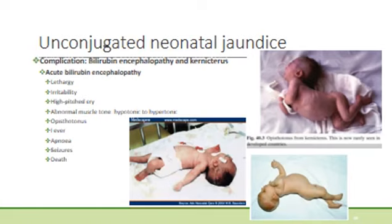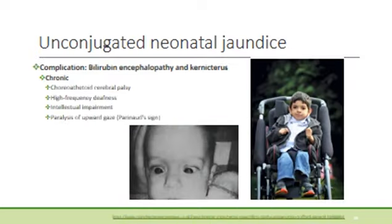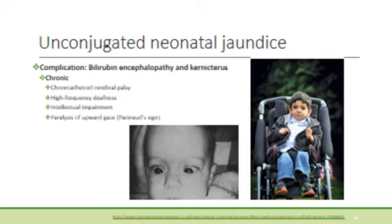In the worst case scenario, bilirubin encephalopathy can lead to death. It can cause chronic disability and is one of the leading preventable causes of cerebral palsy. Because of the toxicity of bilirubin to the basal ganglia, the cerebral palsy type most commonly found is choreoathetoid CP. Bilirubin is also toxic to the nerve cells of the ears, and therefore high-frequency deafness can result. Patients may later experience intellectual impairment and paralysis of upward gaze.